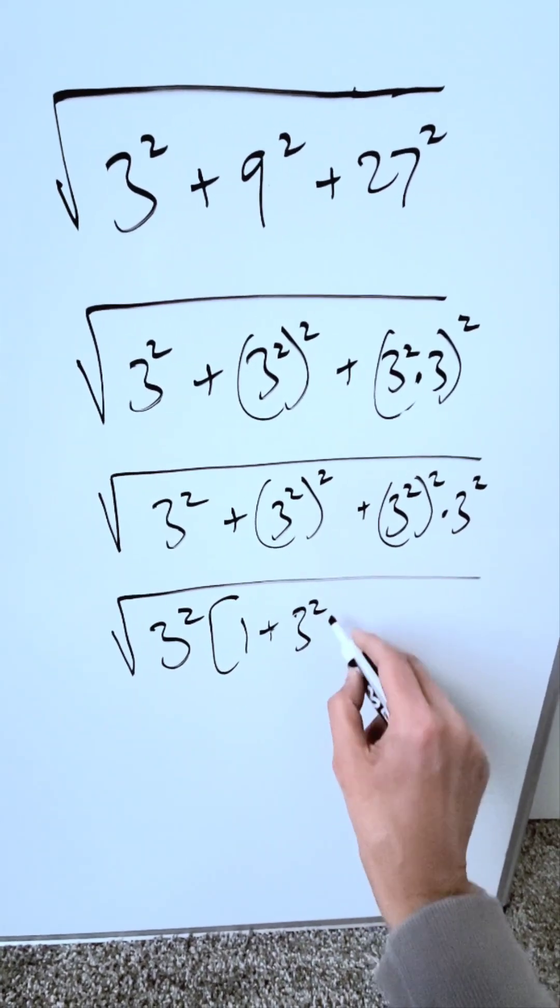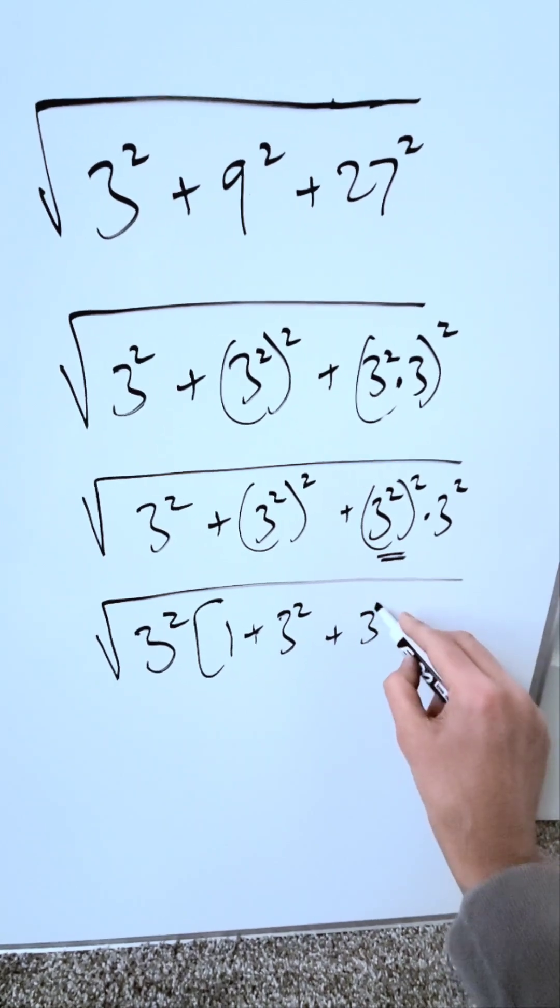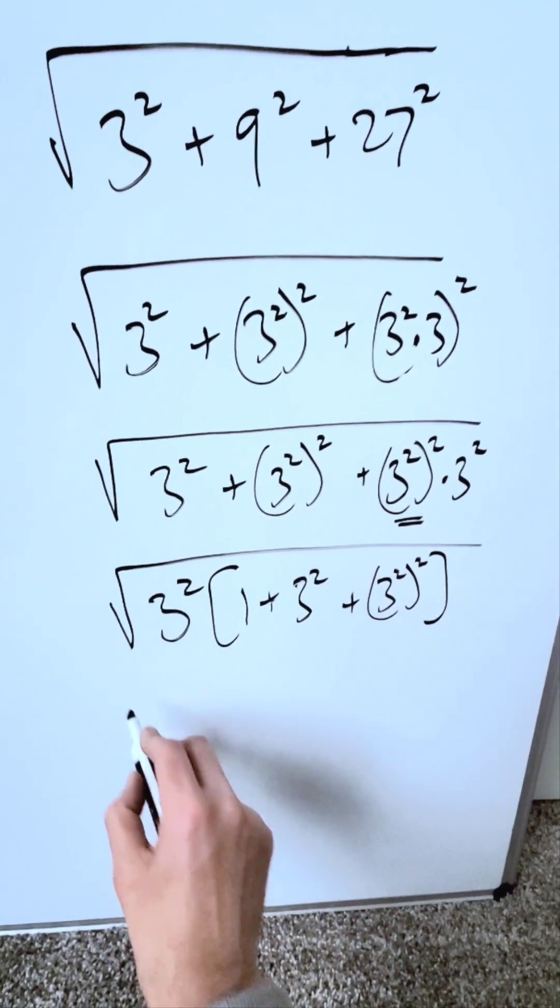It'll come in this 9 times. I'll keep that as 3 squared. And it'll come in this term these many times. It'll be 3 squared to the power of 2. We'll close the parentheses off.